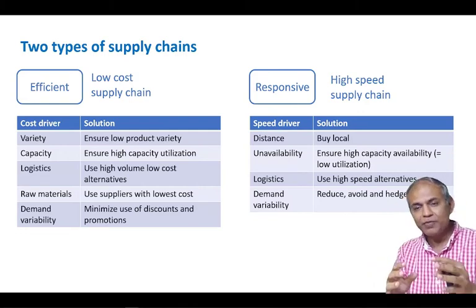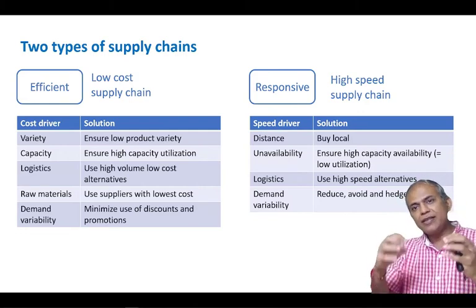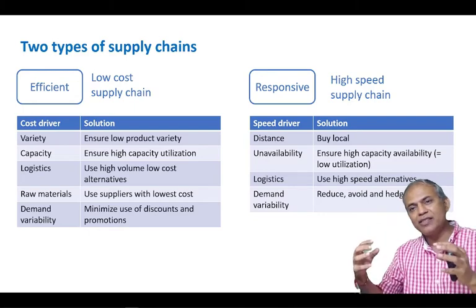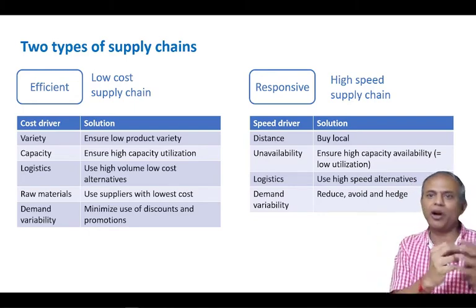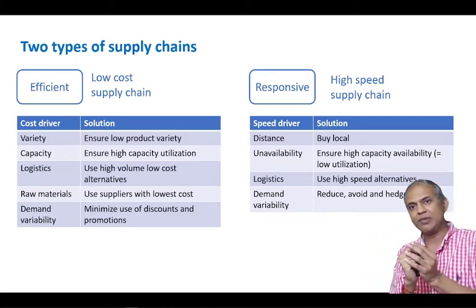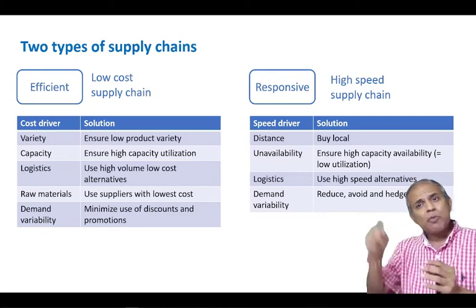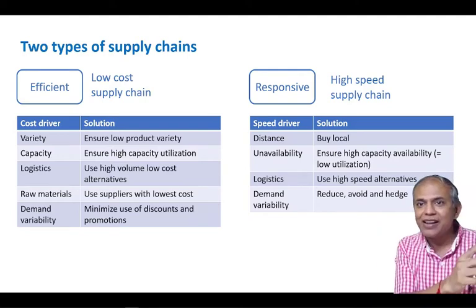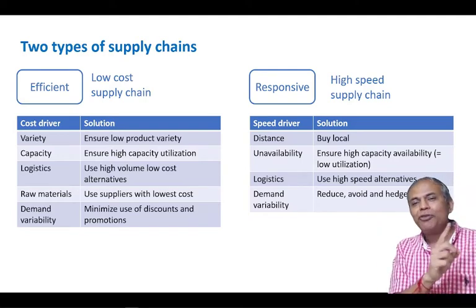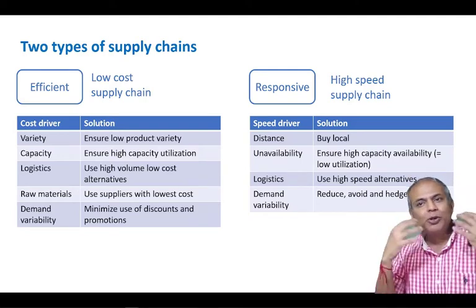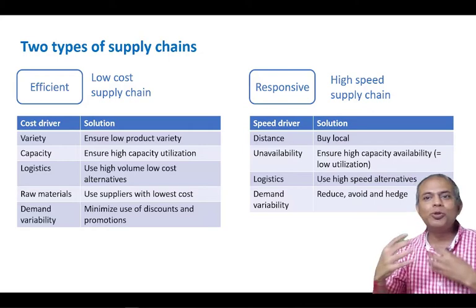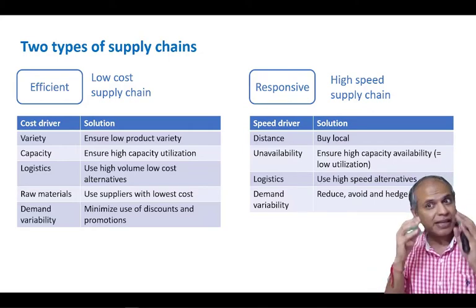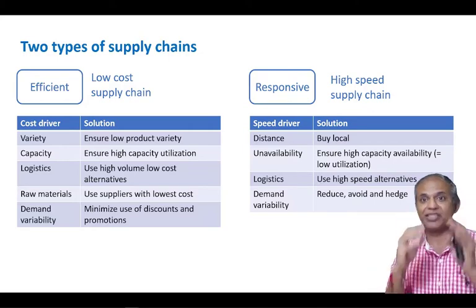So the second principle is that while we can design supply chains to suit a company's product strategy, that supply chain strategy will constrain the future new products and the future of that company. We have to take care of that constraint.